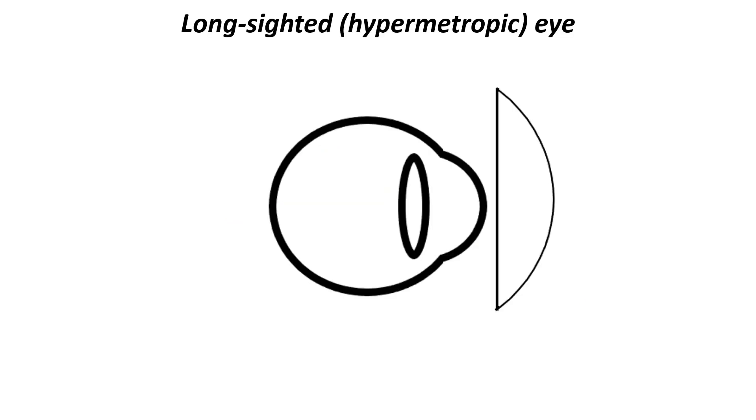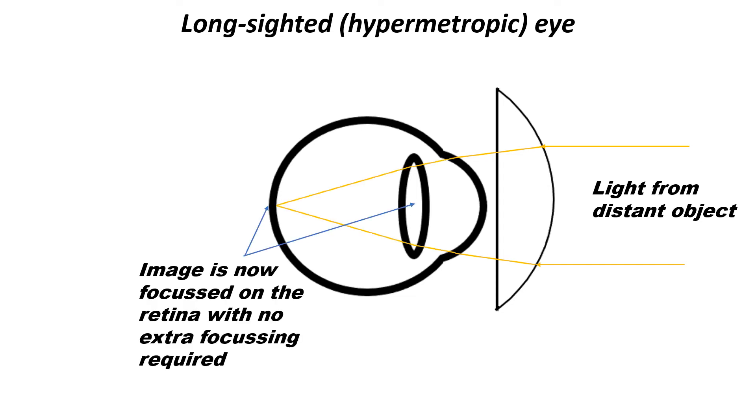When a convex lens is placed in front of the long-sighted eye, what happens now is the light from a distant object passes through the lens and begins to converge. Because the light is converging when it enters the eye, the image is now correctly focused onto the retina, without the person having to apply any extra focusing effort.